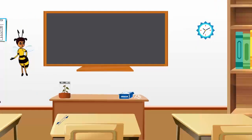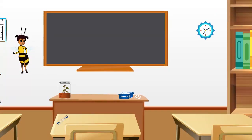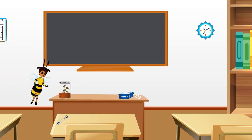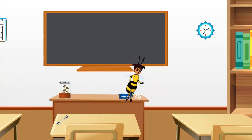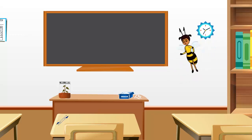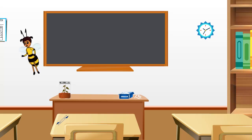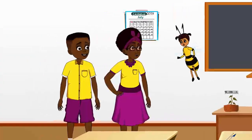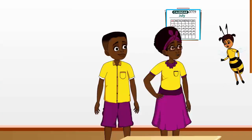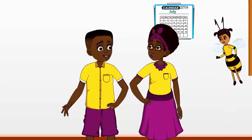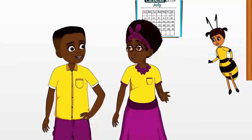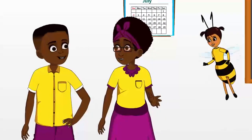Now you know the difference between living things and non-living things. Living things eat, but non-living things do not eat. Living things can move, but non-living things do not move. Living things breathe in air, but non-living things do not breathe in air. We know plants and animals are all living things.